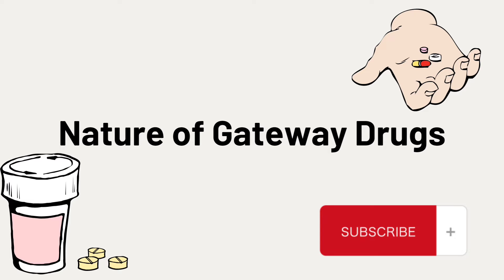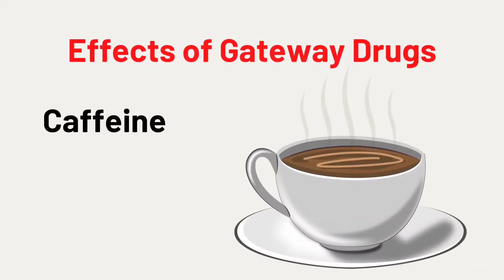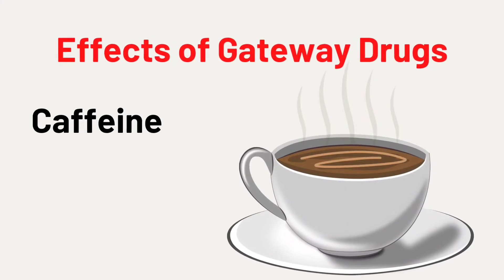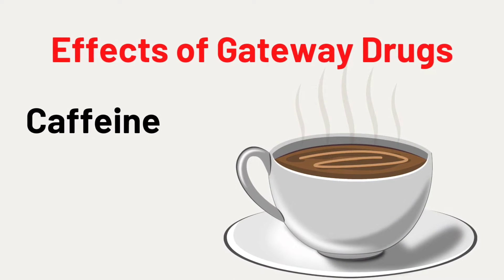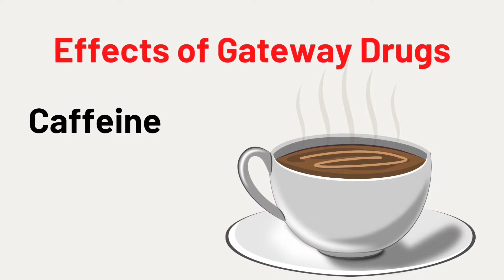Effects of gateway drugs — Caffeine: Aside from coffee, tea, and soft drinks, there are other products that also contain caffeine, such as iced tea, energy drinks, and even cocoa like chocolate. Caffeine is a drug because it affects the body.